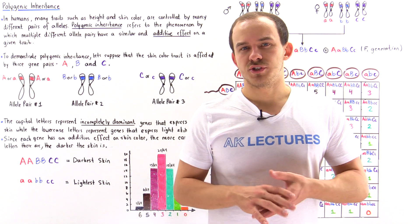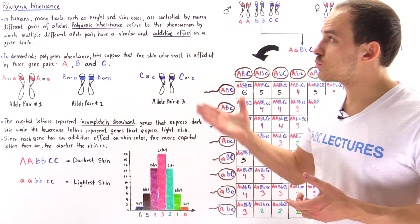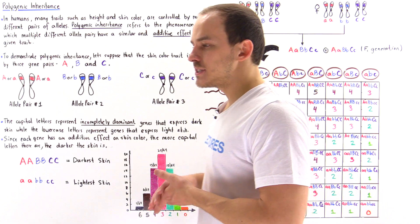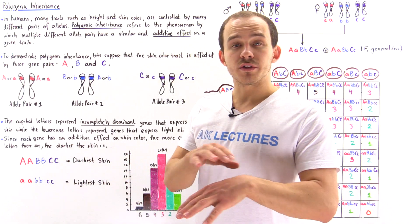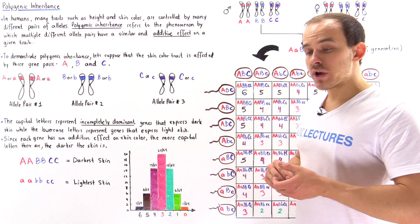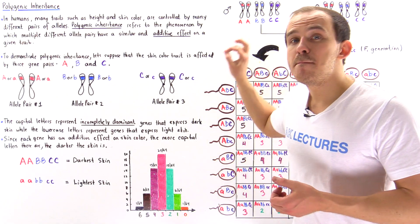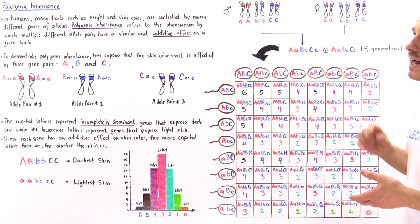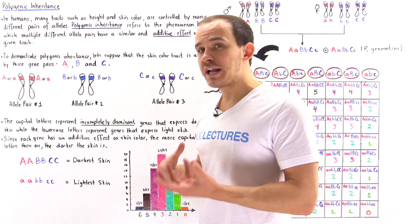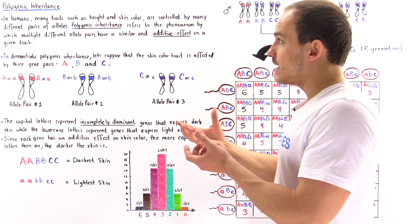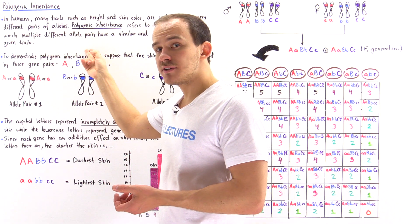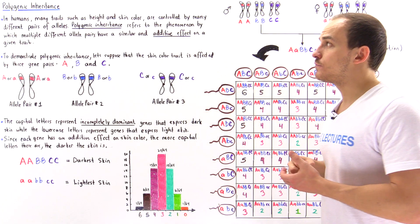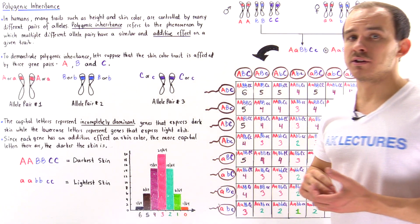The final topic in our discussion on the principles of inheritance will be polygenic inheritance. In humans, there are many different types of traits — for example, the height trait or the skin color trait. These different types of traits are affected or controlled by many different pairs of alleles found on different loci. Polygenic inheritance describes the idea that multiple different allele pairs affect, control, and have an additive effect on a given type of trait, such as height and skin color.